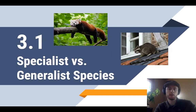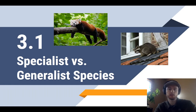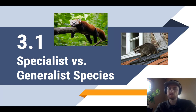So what we have here are two closely related species, the raccoon and the red panda. And although they're very closely related and they look very similar, they have very different habitat and food needs. So the red panda is a specialist species, or sometimes referred to as a niche specialist, and this is because it has a very narrow range of tolerance. It needs very specific habitat and food source — that's bamboo. Red pandas don't digest cellulose very well, so they need to eat huge quantities of bamboo in order to survive.